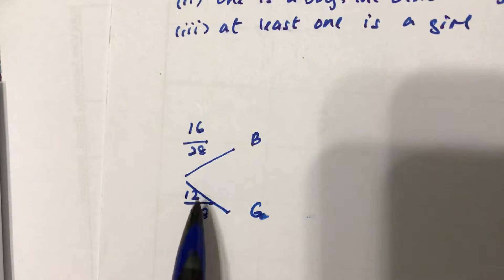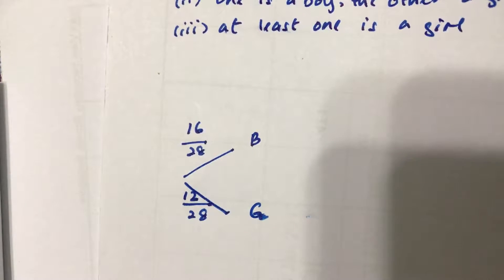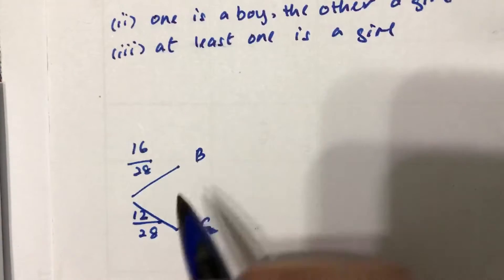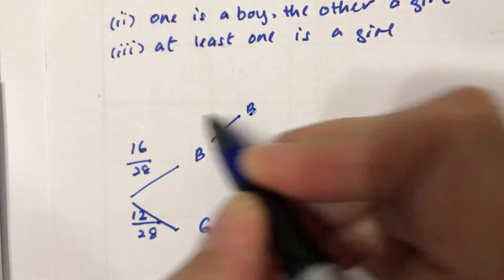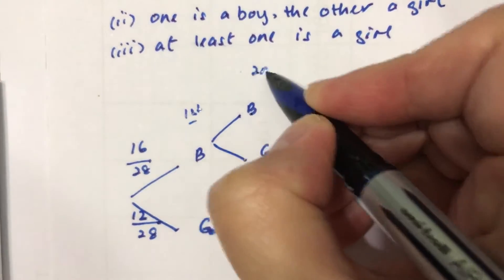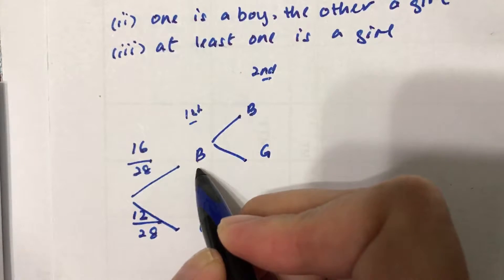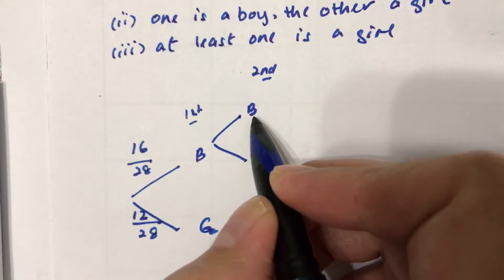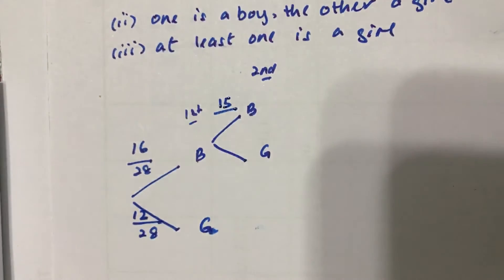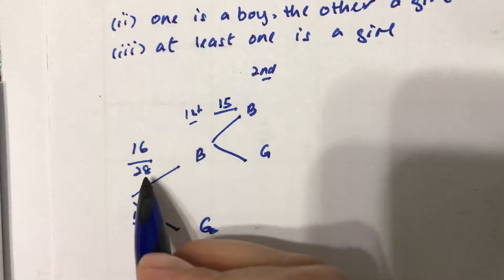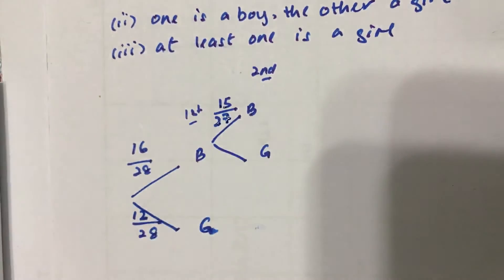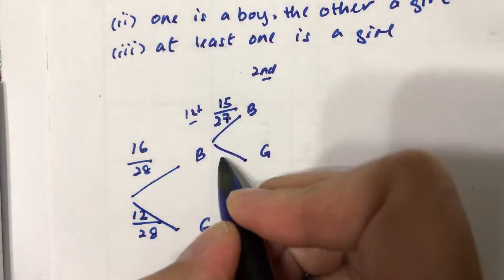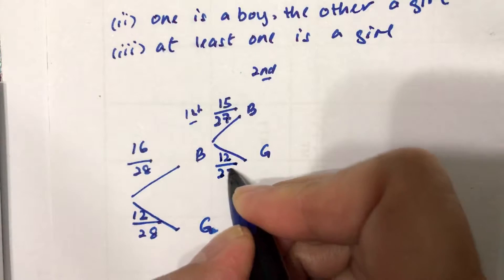The probability of getting a boy is 16 over 28, and the probability of getting a girl is 12 over 28. Since this is a dependent case, I'm not going to reduce the fractions yet, to show you the effect. If the first pick is a boy, the second pick can still be a boy or a girl. Since I've already chosen one boy, I only have 15 boys left, and the total is now 27 students. I haven't touched any girls, so there are still 12 girls to pick from, over 27.